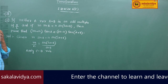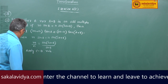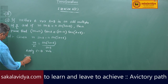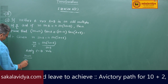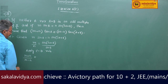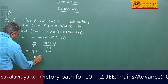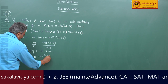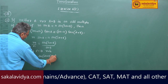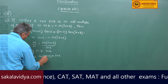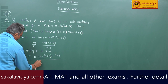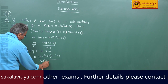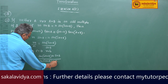Componendo and Dividendo rule. So this can be written as (m+n) by (m-n) is equal to sin(2A+B) plus sin(B) by sin(2A+B) minus sin(B).